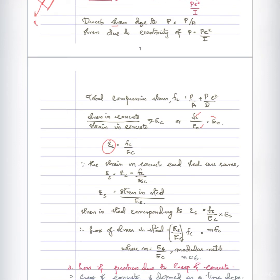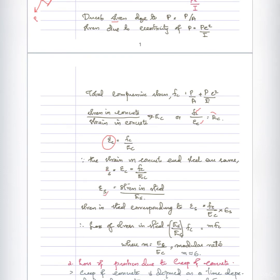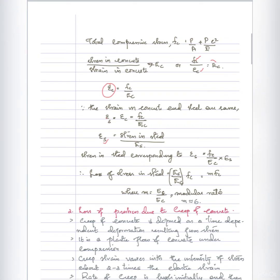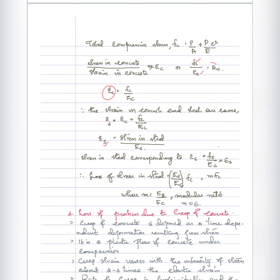Since the steel and concrete undergo the same deformation, epsilon-c is equal to epsilon-s. Therefore, epsilon-s equals Fc by Ec. Since stress in steel equals epsilon-s multiplied by modulus of elasticity of steel Es, the stress in steel corresponding to epsilon-s is Fc divided by Ec, multiplied by Es. That gives the loss of stress in steel.